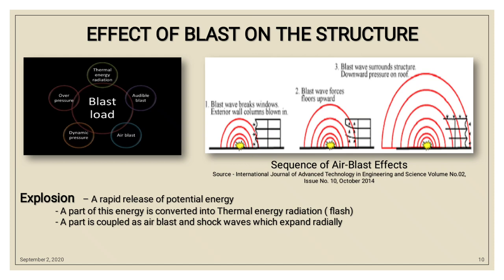There is a sequence of air blast effects. First, the blast wave breaks windows, exterior walls, and columns. Then the blast wave forces the floor upward. Finally, the blast wave surrounds the structure, exerting downward pressure on the roof.